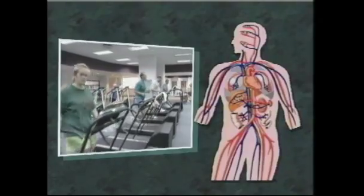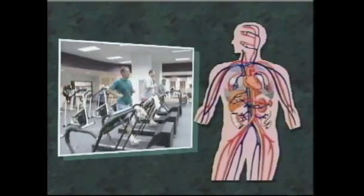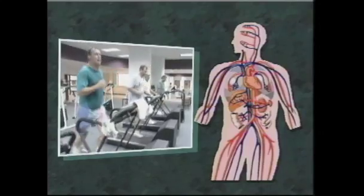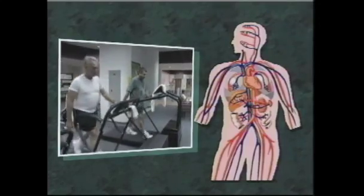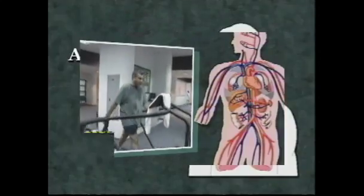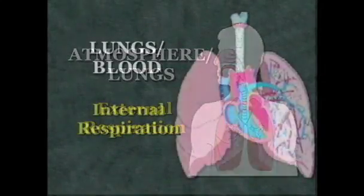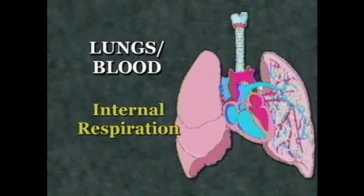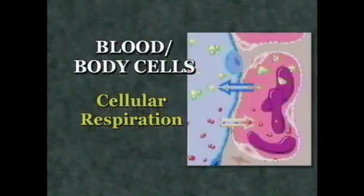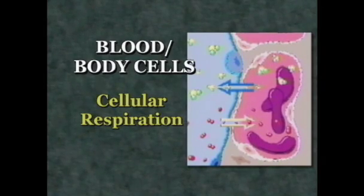There are three places where oxygen and carbon dioxide are exchanged within the body. One: atmosphere to lungs — external respiration. Two: lungs to blood — internal respiration. And three: blood to body cells — cellular respiration.